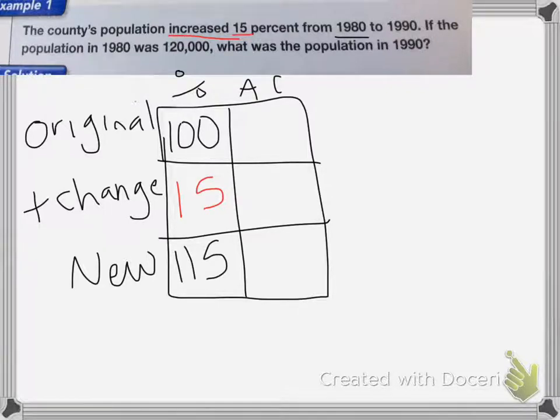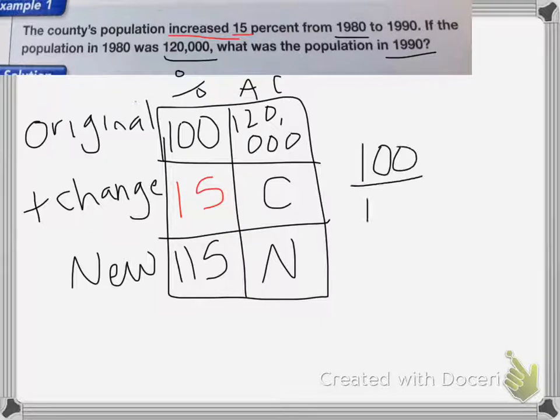For actual count, the original number is 120,000. I don't know what the actual count for change is. I don't know what the new is. It wants to know the population in 1990. So now I can take this information and make my fractions.